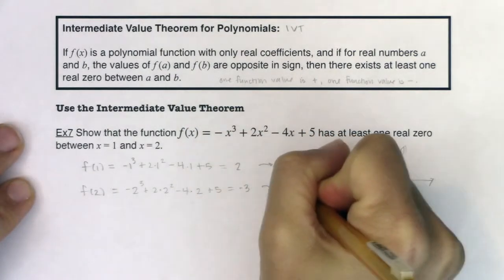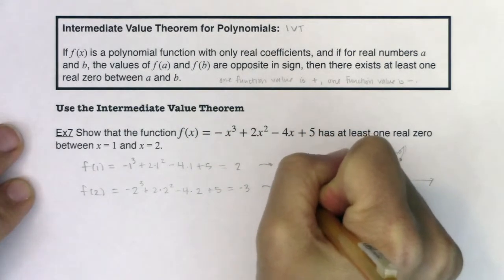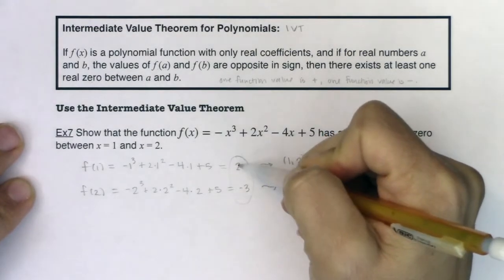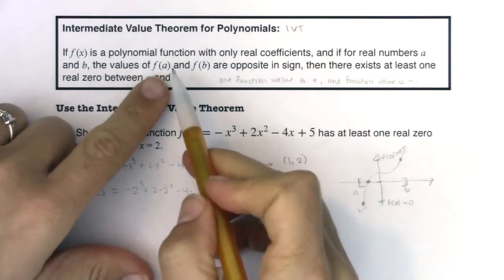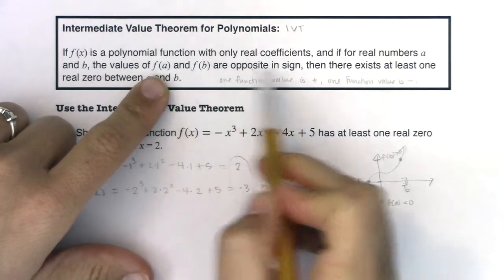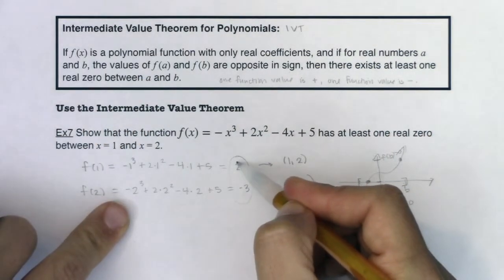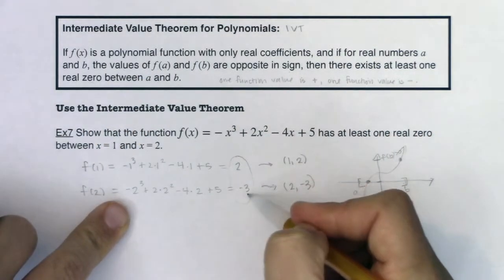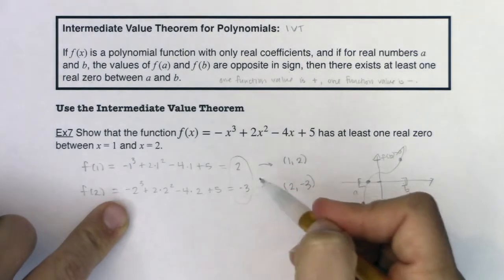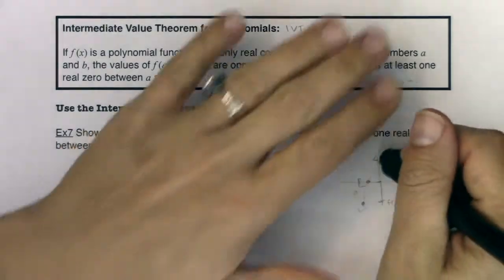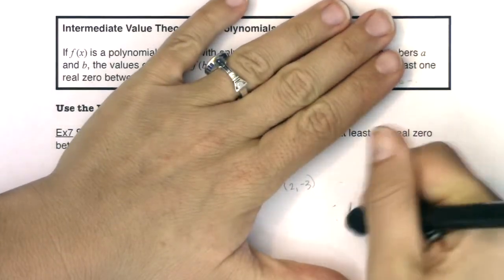If I wanted to think about this as an ordered pair, that's the ordered pair (2, -3). But what I want you to take note of is that these y values are opposite in sign. f(1) and f(2) are opposite in sign. And what that's telling us is that if we were above the x-axis here, and then we went below the x-axis here, I must have passed through the x-axis. And again, passing through the x-axis, having an x-intercept means that you had a y value of 0. So let me adjust this graph, and we'll see what's going on here.